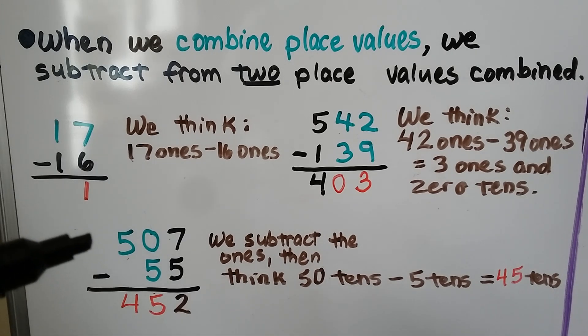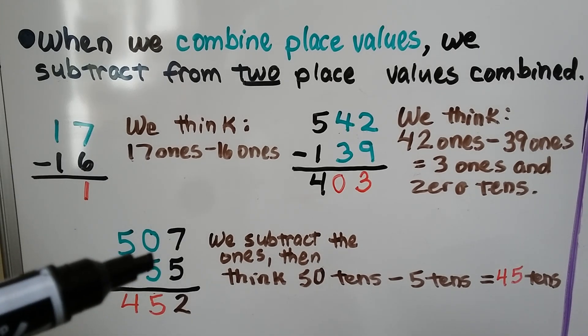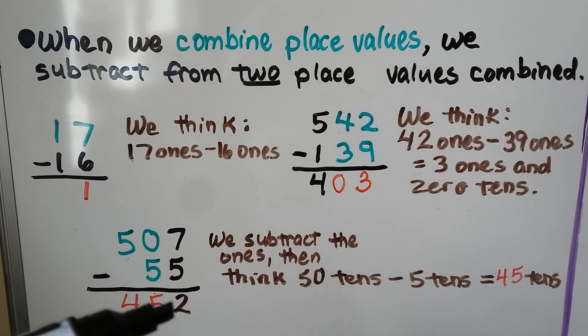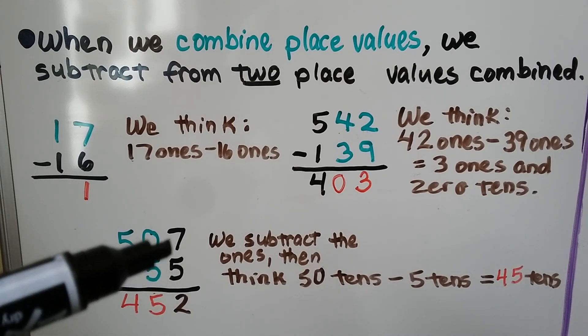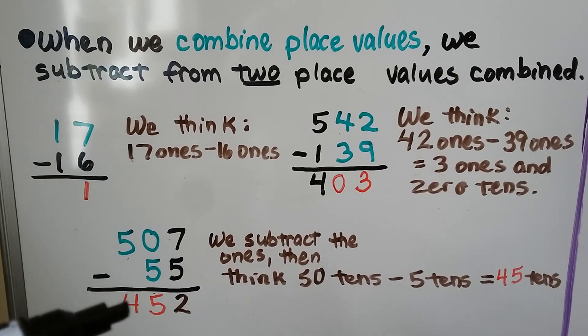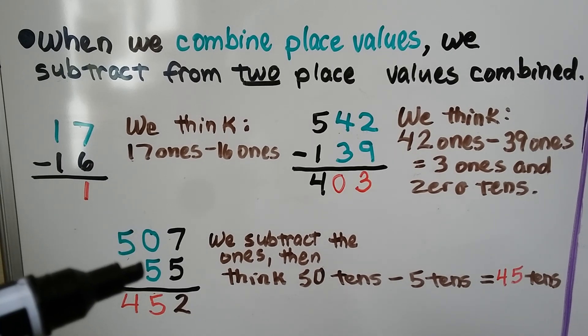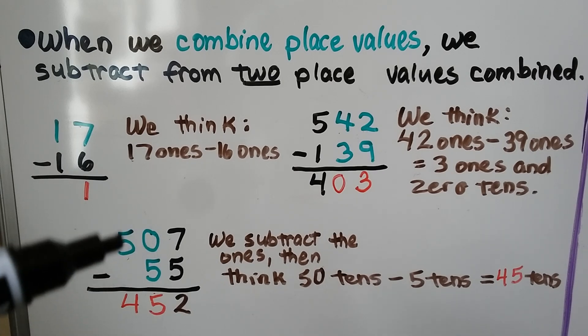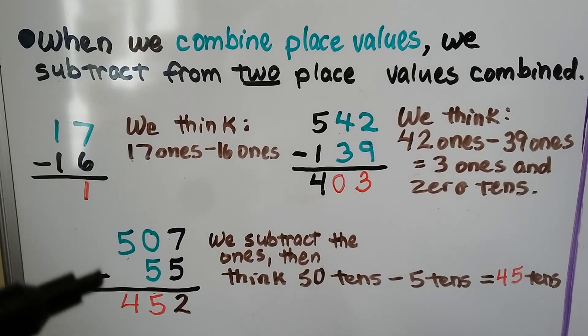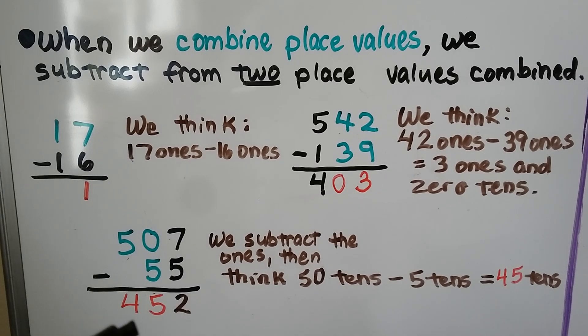For this one, 507 minus 55, we can do 7 minus 5 and get 2, subtracting the ones. Then we see that 0 is less than 5. We can combine this place value as 50 and think 50 tens minus 5 tens is 45 tens.